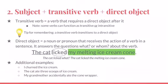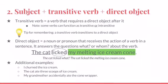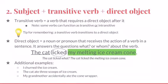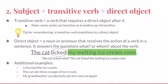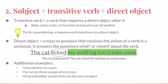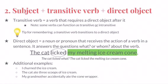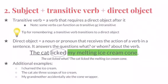Here is Basic Sentence Pattern Number 2: Subject plus Transitive Verb plus Direct Object. As you might be able to guess, a transitive verb is the opposite of an intransitive verb — it requires a direct object after it in order to make sense. You can remember that transitive verbs need direct objects because 'transitive' and 'transition' both begin with the prefix 'trans.' A transitive verb transitions to a direct object. A direct object is a noun or pronoun that receives the action of a verb in the sentence.